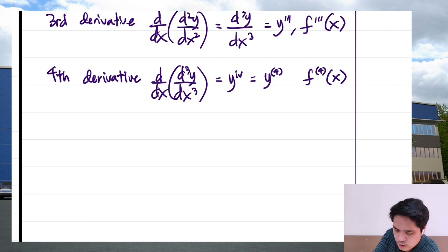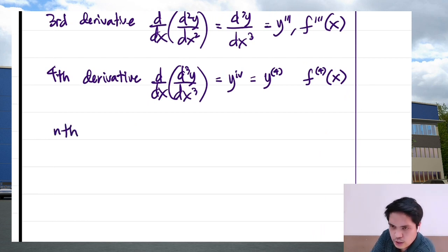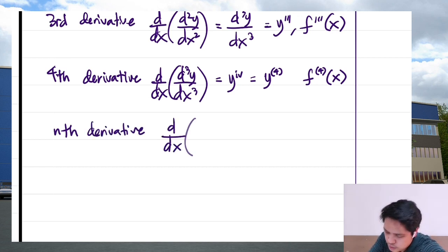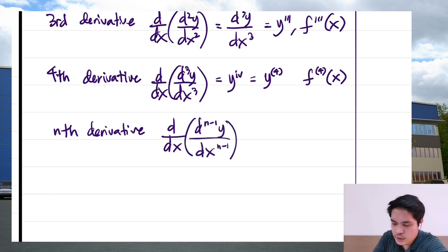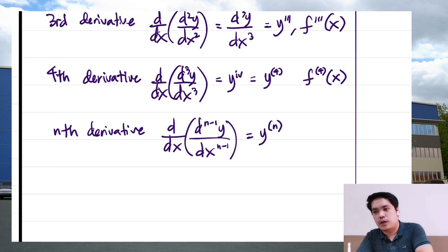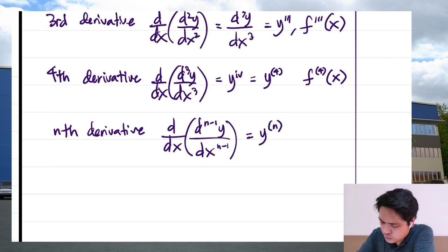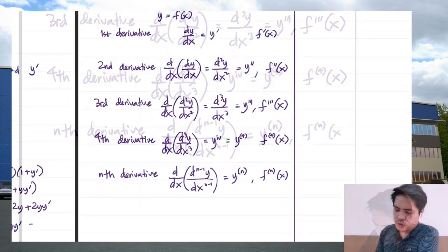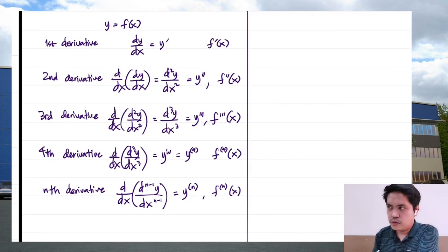In general, if we have the nth derivative, where n is an integer, that would be the derivative of the (n−1)th derivative — simply the derivative of the derivative. That's the concept of higher derivatives. It's that simple.